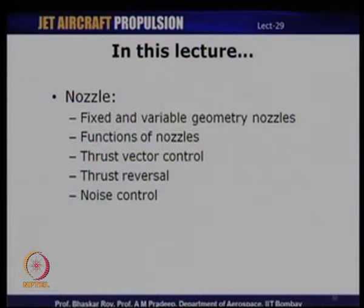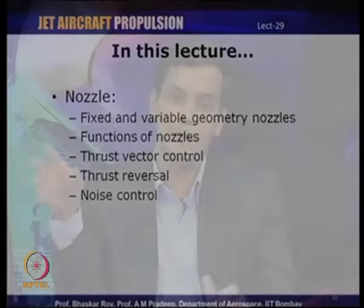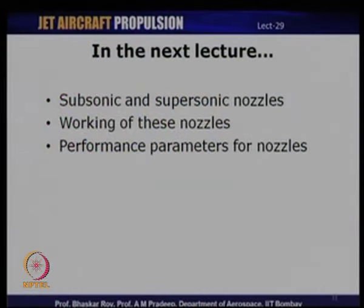To wind up this lecture: we have discussed nozzles covering the fixed and variable geometry nozzle types, functions of nozzles, and three other important functions — thrust vector control, thrust reversal, and noise control. In the next lecture we will continue discussing nozzles, covering subsonic and supersonic nozzles, how these nozzles work, and we will also come up with performance parameters for assessing the performance of different types of nozzles.